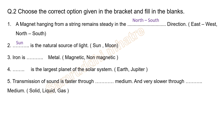Dash is the natural source of light. Options: Sun and Moon. The answer is Sun, because the Sun is a natural source of light, while the Moon is not. Next, iron is a magnetic metal.